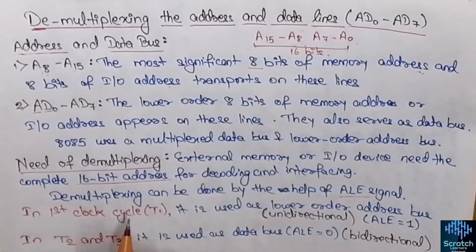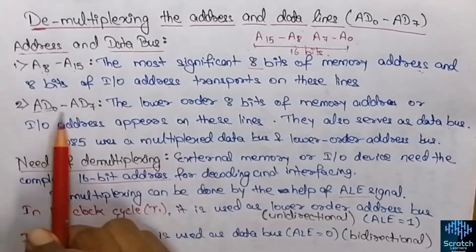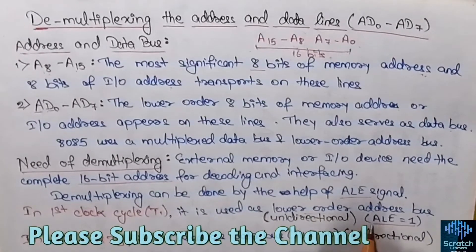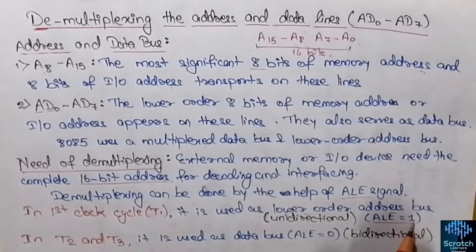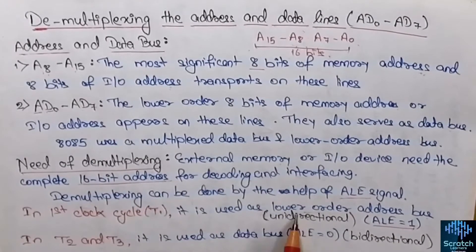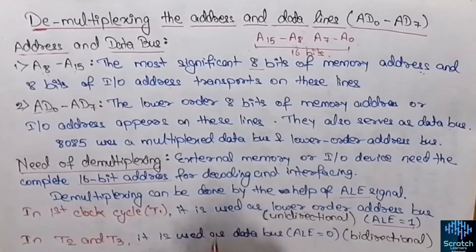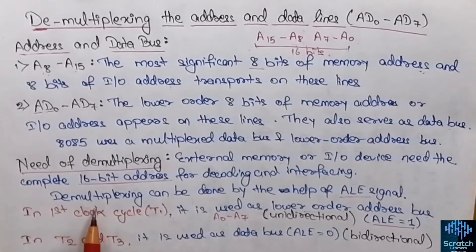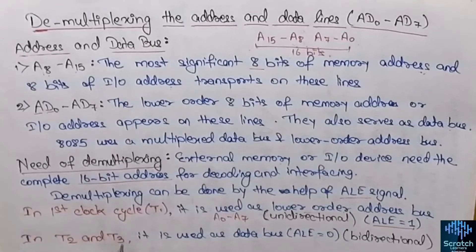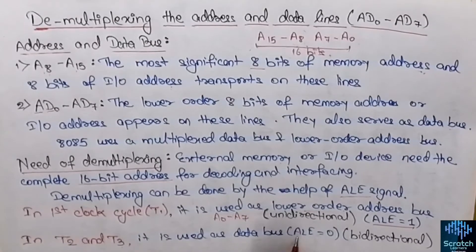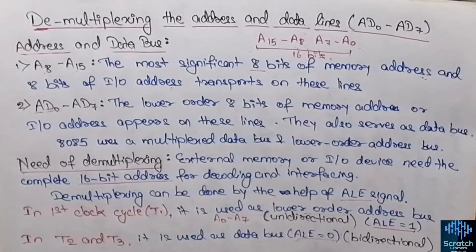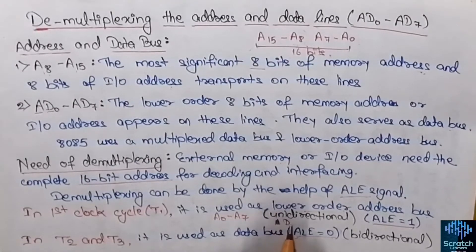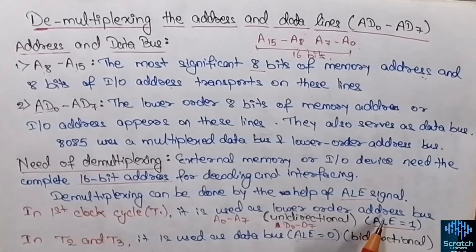In the timing diagram we have four T-states. During the first clock cycle T1, the AD0 to AD7 lines are used as the lower-order address bus when ALE (Address Latch Enable) is high. They behave as A0 to A7 lines. In the second and third clock cycles T2 and T3, these lines are used as the data bus when ALE is equal to 0, and they behave as D0 to D7 lines.